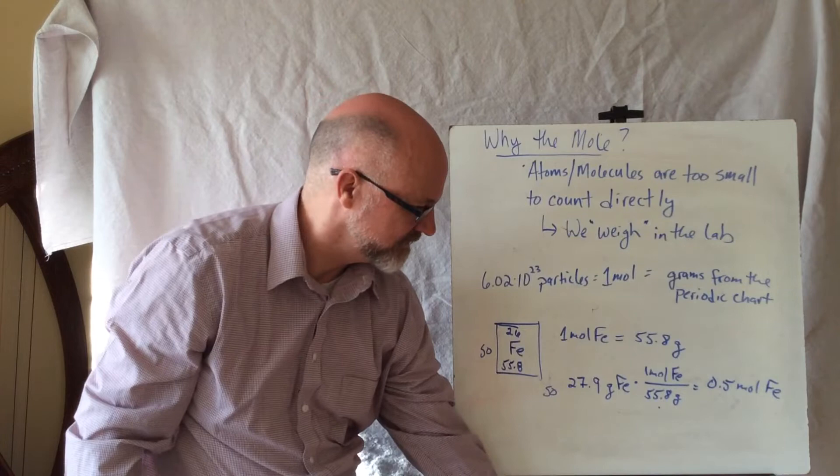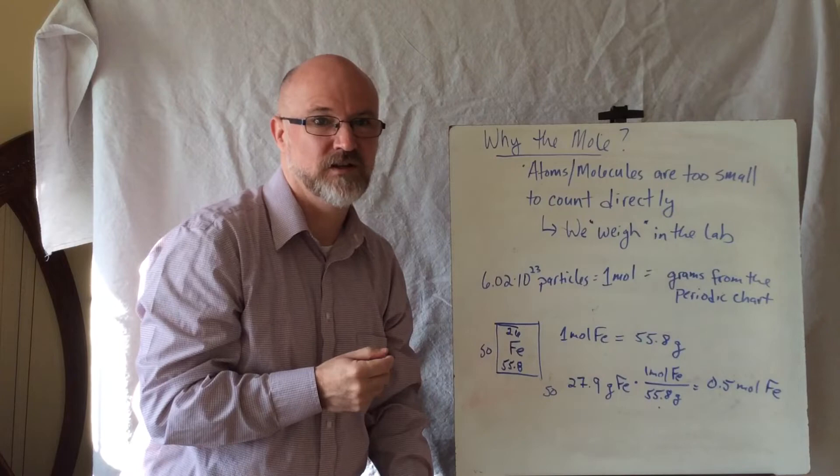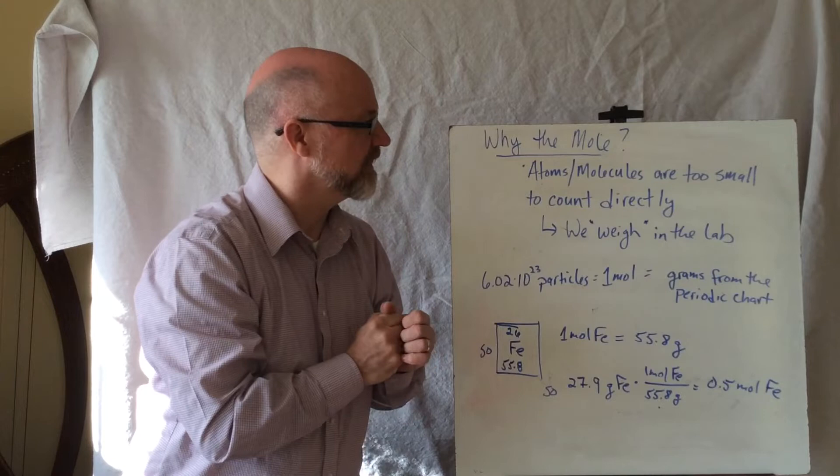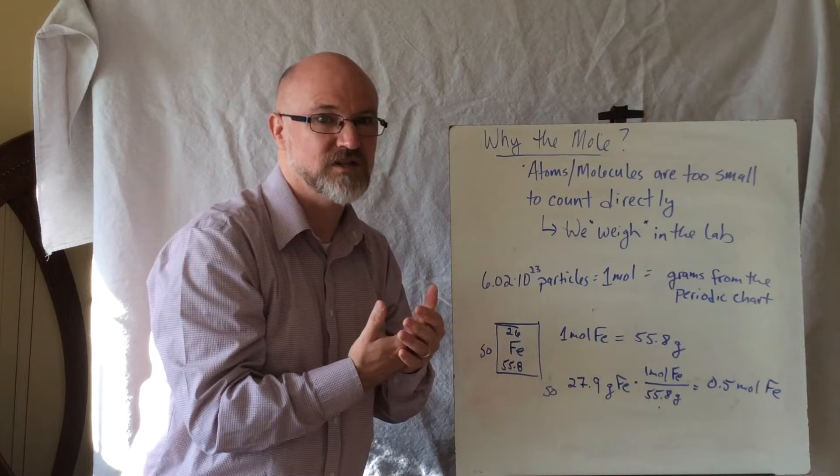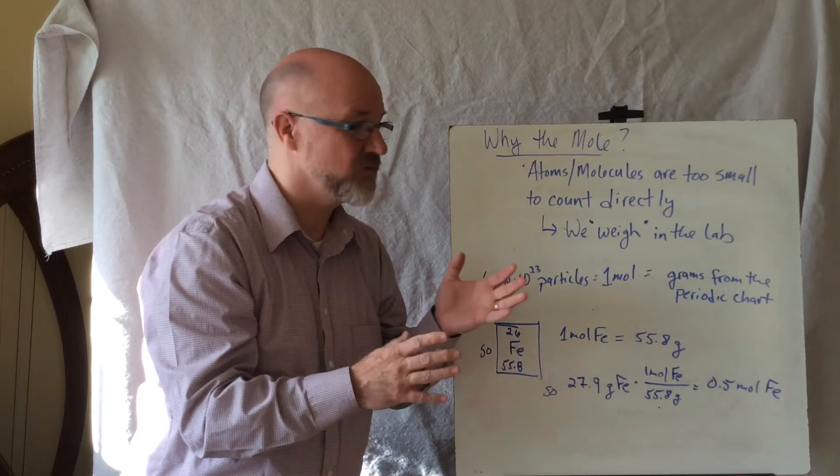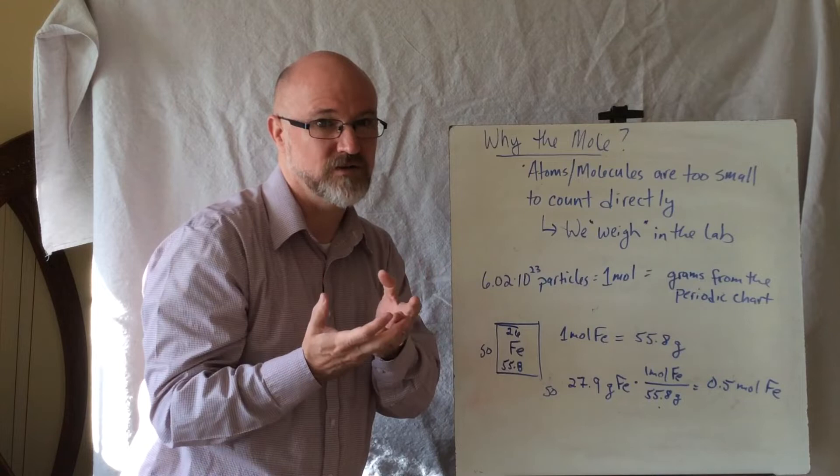So why the mole? As I've already alluded here, atoms and molecules are too tiny to see, too tiny to count directly. It's not like my eggs where I can touch them, hold them, put them in a box. So they're too small to count directly. How do we measure anything in a chemistry lab? How do we measure anything in industry when we're talking about product? Most of the time, how do you buy things - either by volume or by weight? In the lab, we weigh things. So we have to have a connection between how many particles and how heavy it is.